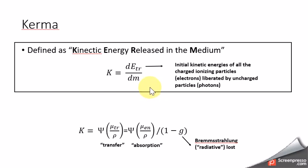By definition, it is the energy divided by mass. It is the initial kinetic energy of all the charged ionization particles. In this case, it is secondary electrons liberated by the uncharged particles. In this case, it is the incoming photon beams that are passing through this region.